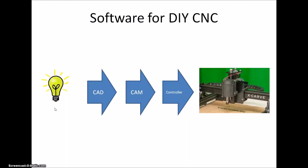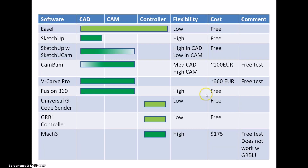In an earlier video I walked through the different programs I had been using, taking me from idea through CAD, CAM, and then to a program that puts the G-code down to the machine. The list is here, and I walked through how the complexity and flexibility of the programs were, and also whether they were free or had some cost.